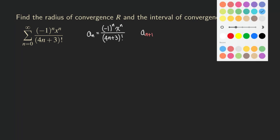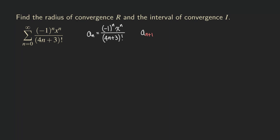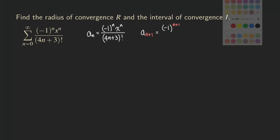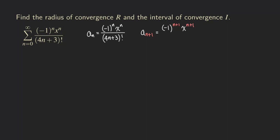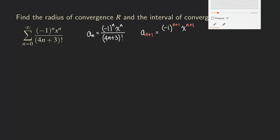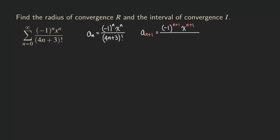Replacing all the n's by n plus 1, we are going to get negative one to the n plus 1 in the numerator, and then x to the n plus 1.